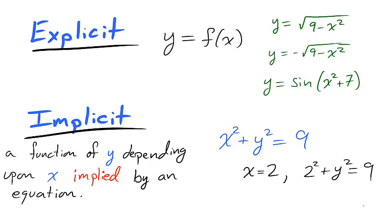For example, if in our circle equation we're told that x is equal to 2, the y value is then implied by the equation 2 squared plus y squared equals 9. Subtracting 4 from both sides, we find y squared equals 5. So when x is equal to 2, y is found by the equation y squared equals 5.